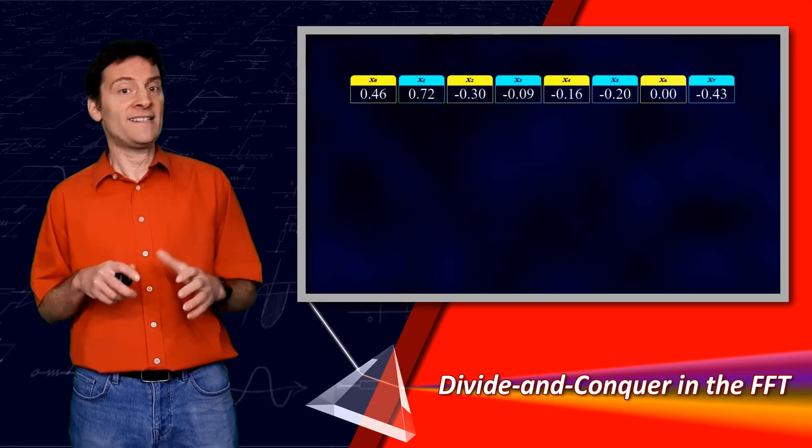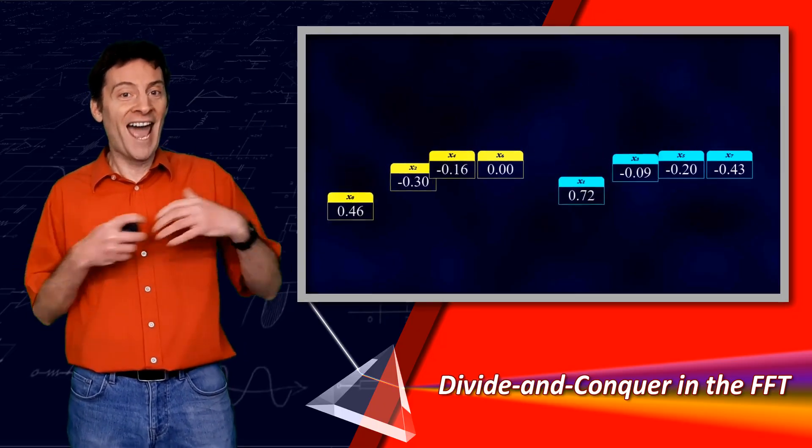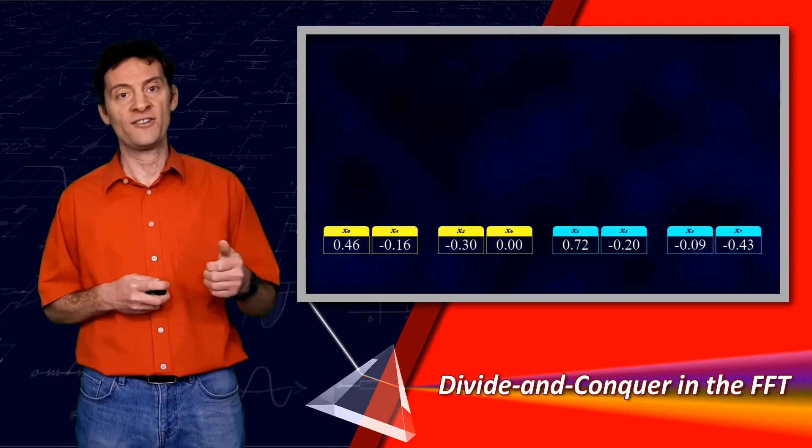Splitting the signal into even and odd indices in the FFT exploits the symmetry of the cosine waves and the anti-symmetry of the sine waves in a computationally efficient way.